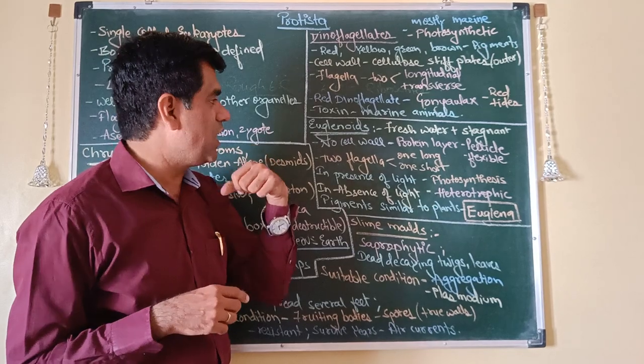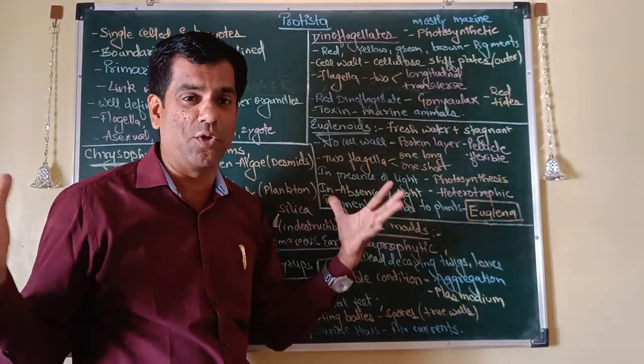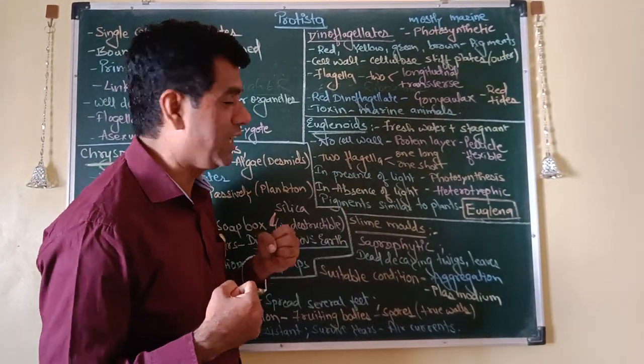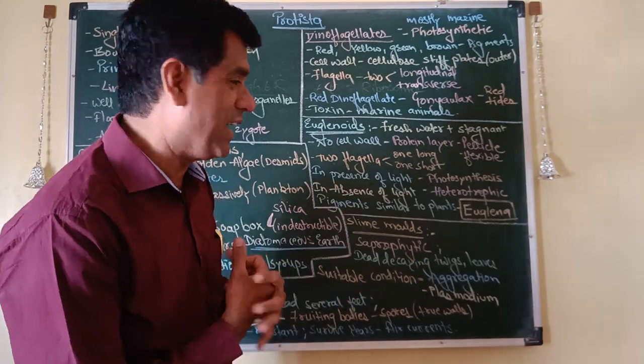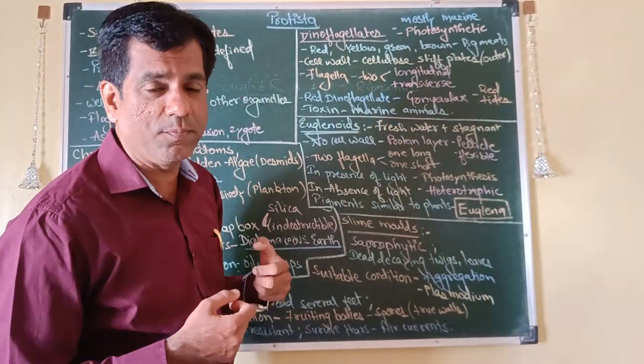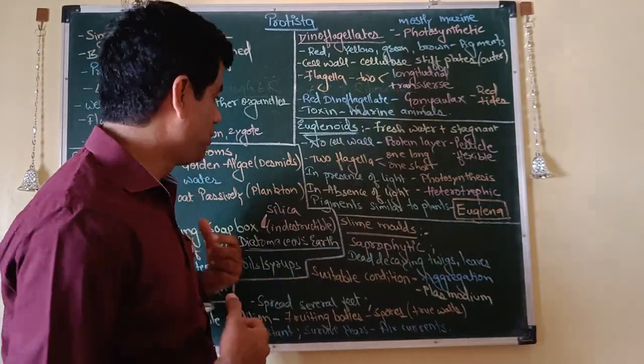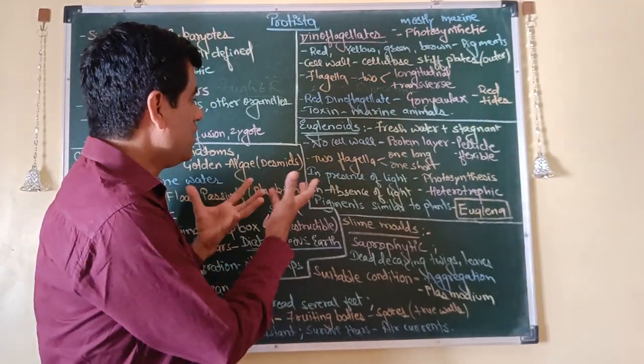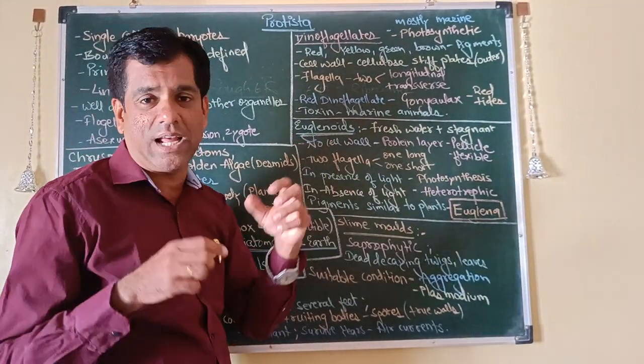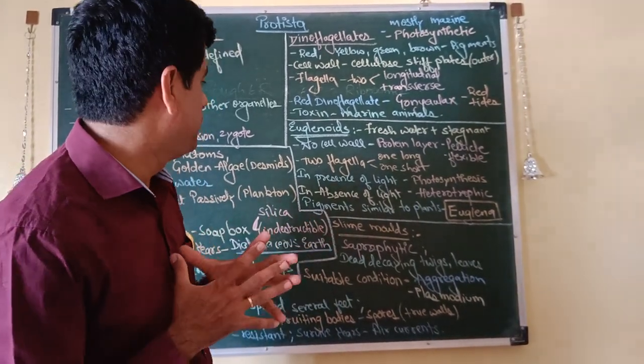Then you have this class euglenoids. I think they are linking our plants and animals because they can change their mode of nutrition, wonderful. They can be autotrophic and they can be also heterotrophic at times. They are found in fresh water, mainly in stagnant water. They do not have cell wall. They were more plant-like, and now this is also like a bit plant and a bit animal-like, but it doesn't have a cell wall, but it has a protein layer which is called the pellicle, which makes their body a bit flexible.